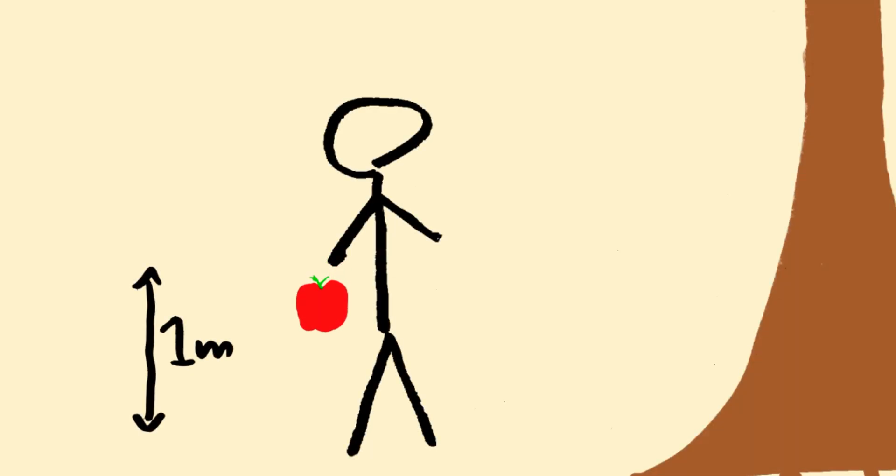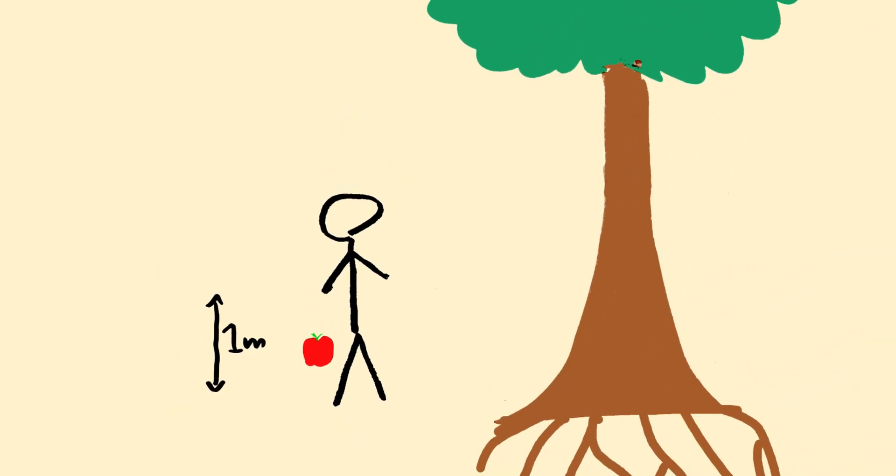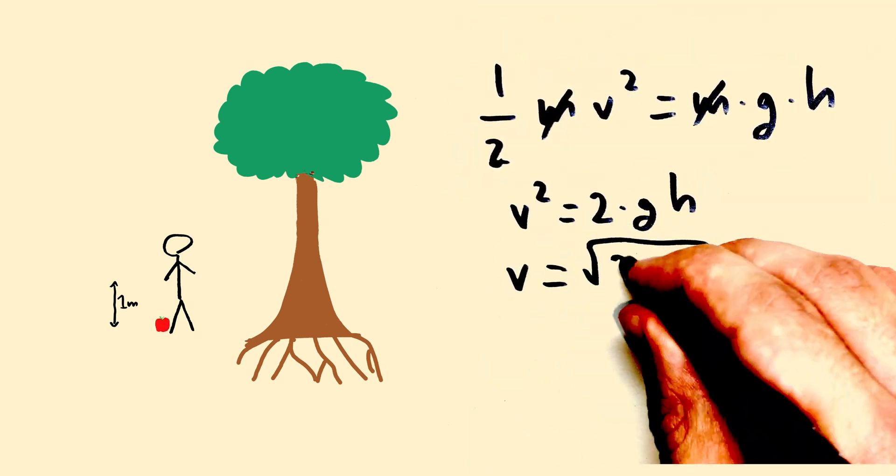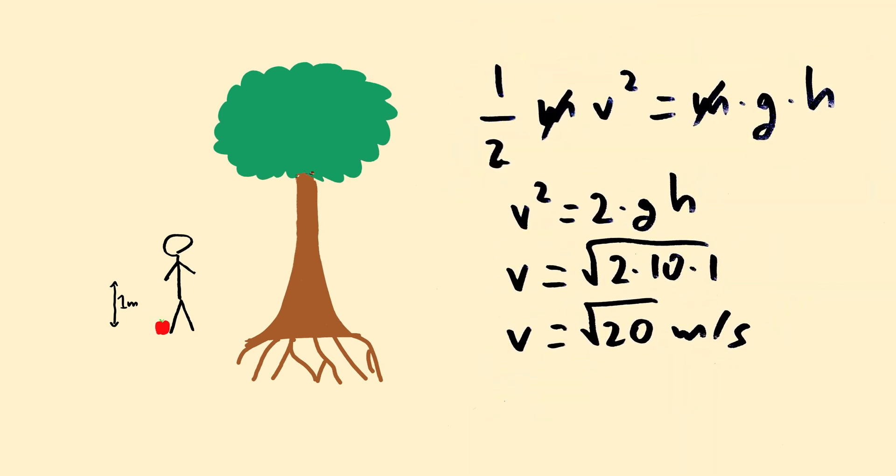When you drop an apple from a meter high, it hits the ground with a speed of square root of 20 meters per second. Why?